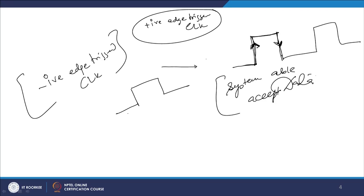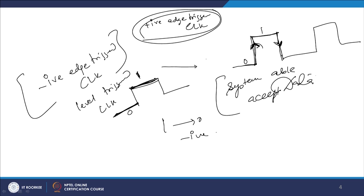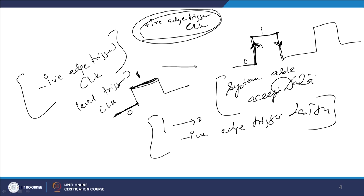You can also have a level-triggered clock: when the level is high the circuit is sampling data, which is positive level-triggered, or when level is low, which is negative level-triggered. A 0-to-1 clock transition defines positive edge-triggered; a 1-to-0 transition defines negative edge-triggered. These are very important distinctions to note carefully.